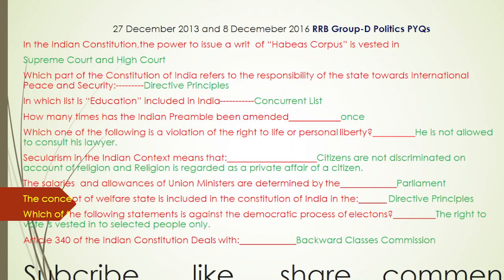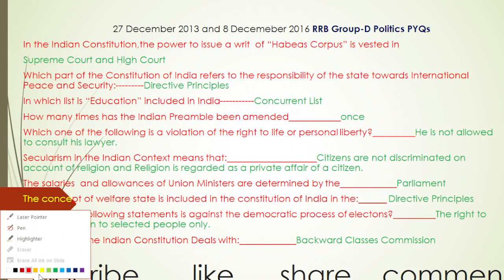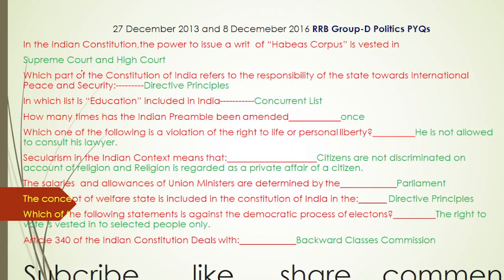The first question: In the Indian Constitution, the power to issue a writ of habeas corpus is vested in — the correct answer is the Supreme Court and High Court.